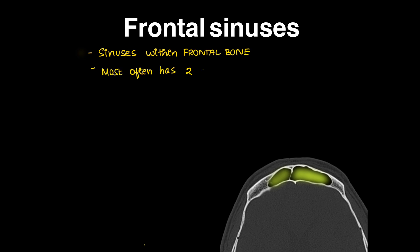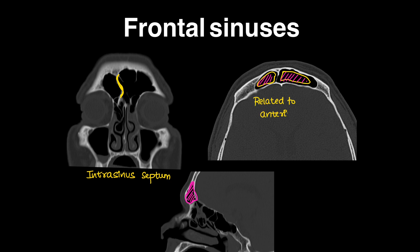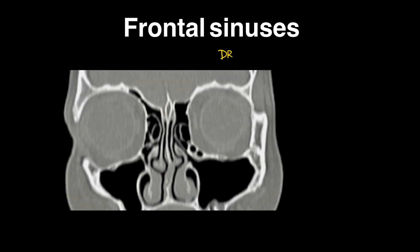Moving on to frontal sinuses — they are paired sinuses within the frontal bone. Most often the frontal sinus has two chambers separated by a bony septum. On coronal images these are the frontal sinuses; on axial images we can see the intra-sinus bony septum dividing it into two chambers. It is related to the anterior cranial fossa and also to the orbit.